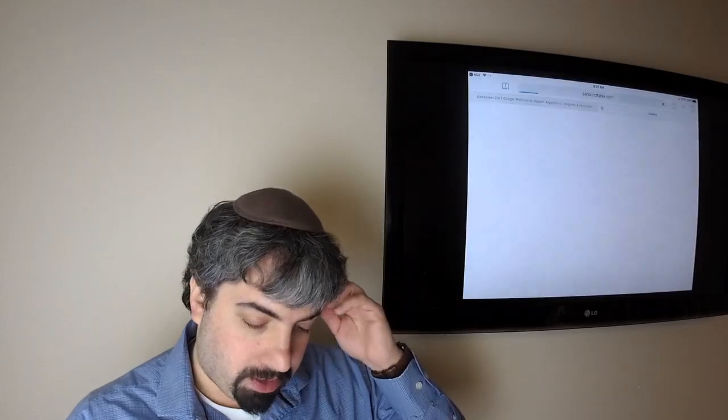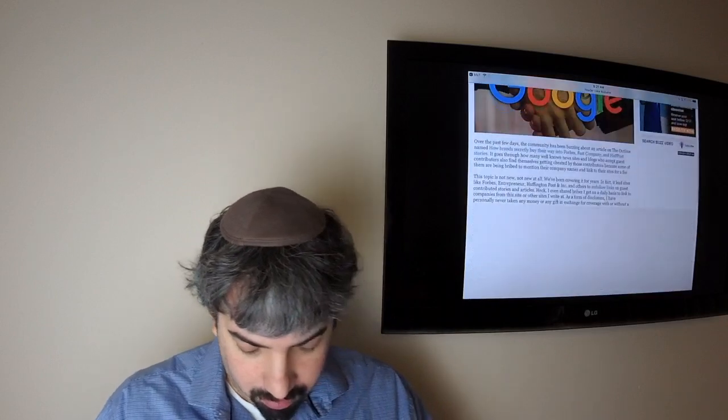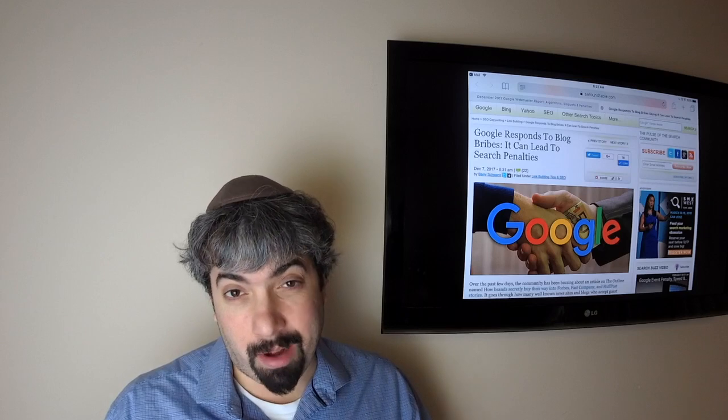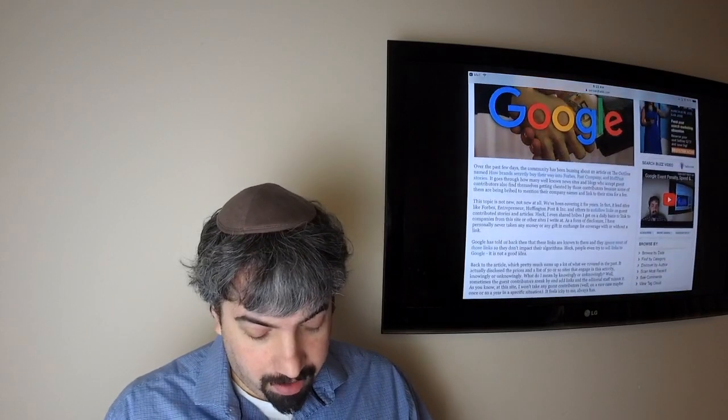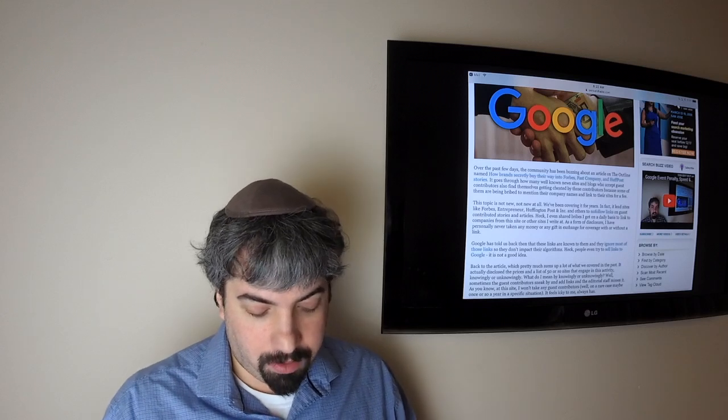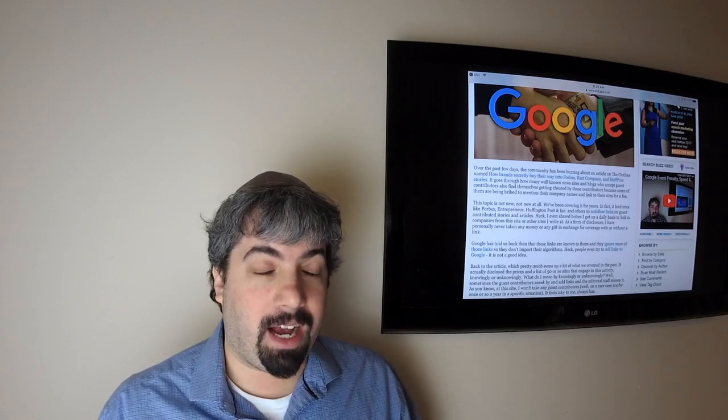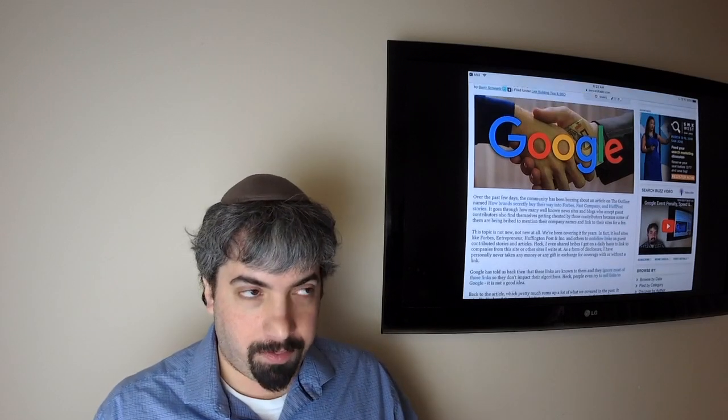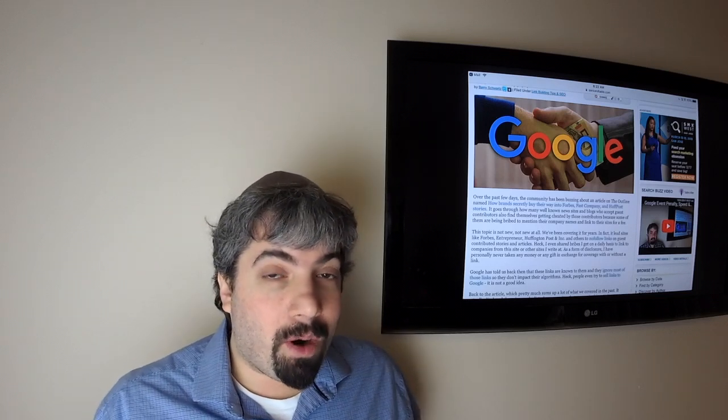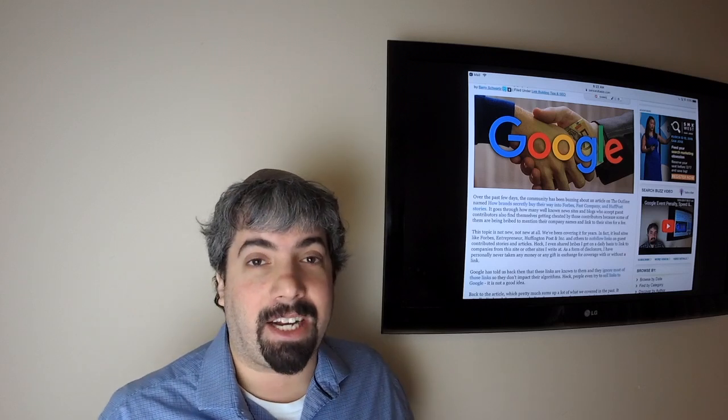Moving on, Google has responded to this article by The Outline. The title of the article is 'How Brands Secretly Buy Their Way Into Forbes, Fast Company and Huffington Post Stories.' Now of course we've covered this type of stuff a lot in the past. We actually covered how Google doesn't count links from them, and how Forbes Inc., Huffington Post, Entrepreneur, and a bunch of other magazines actually went ahead and started no-following posts from guest contributors.